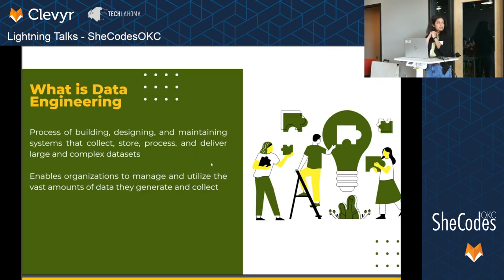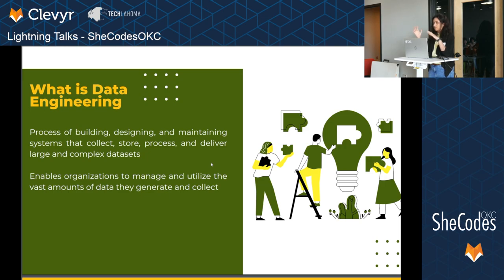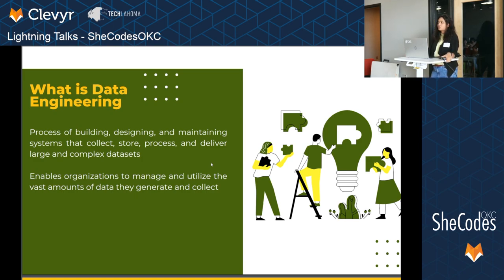Basically, data engineering is identifying what data you need and where it's available, kind of getting it all into one place, doing your logic, and then making it available for its actual goal, which is usually business intelligence — where you build reports and give the stakeholders a comprehensive overview of how your business is doing. The other goal is machine learning, where we send the prepped data to the algorithms or the data scientists who build different models and make the actual magic happen.